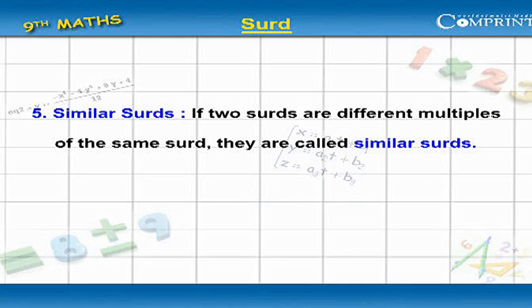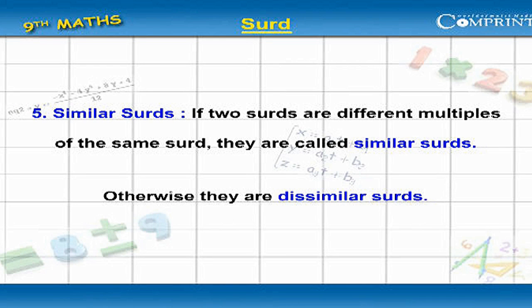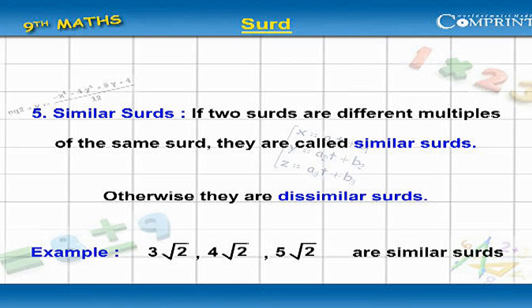Similar surds: If two surds are different multiples of the same surd, they are called similar surds. Otherwise, they are dissimilar surds. Example: 3 root 2, 4 root 2, 5 root 2 are similar surds. 6 root 2, 7 root 3 are dissimilar surds.